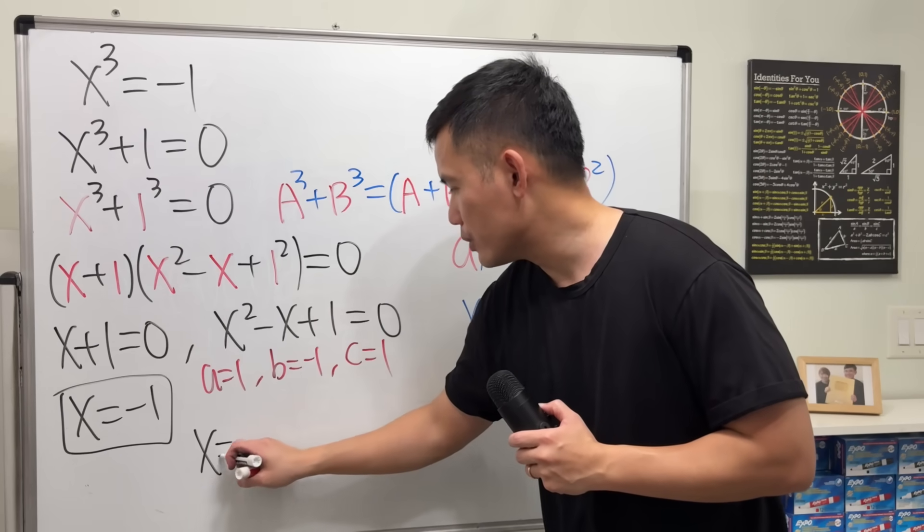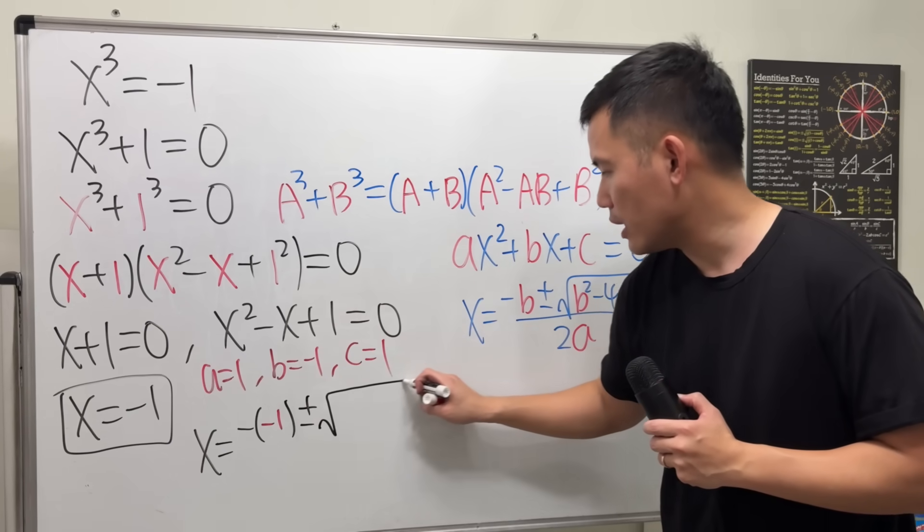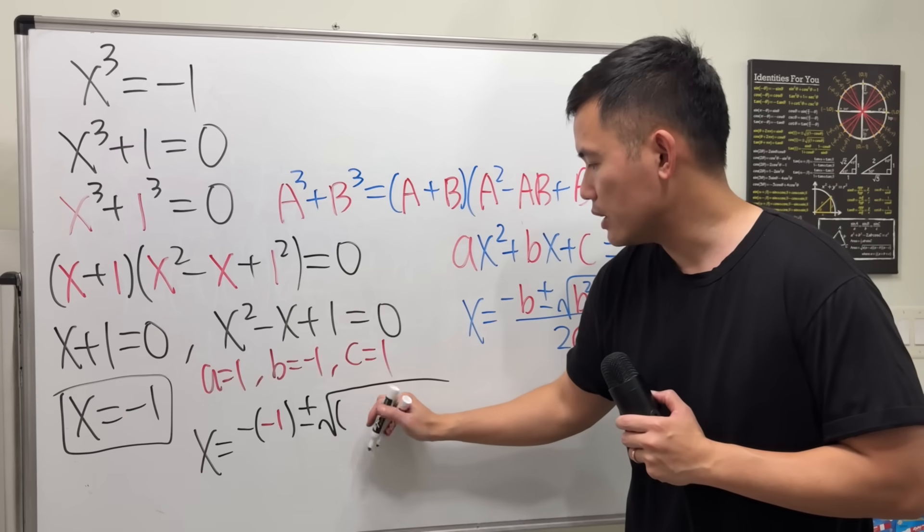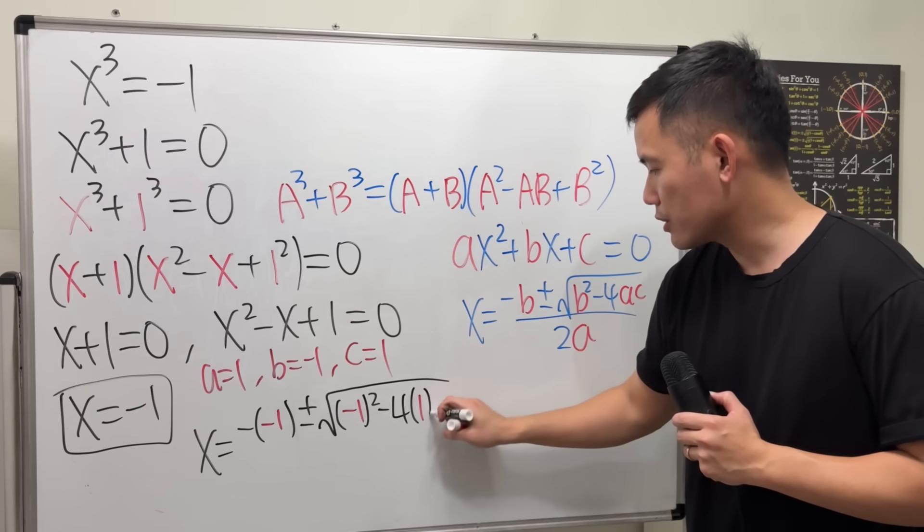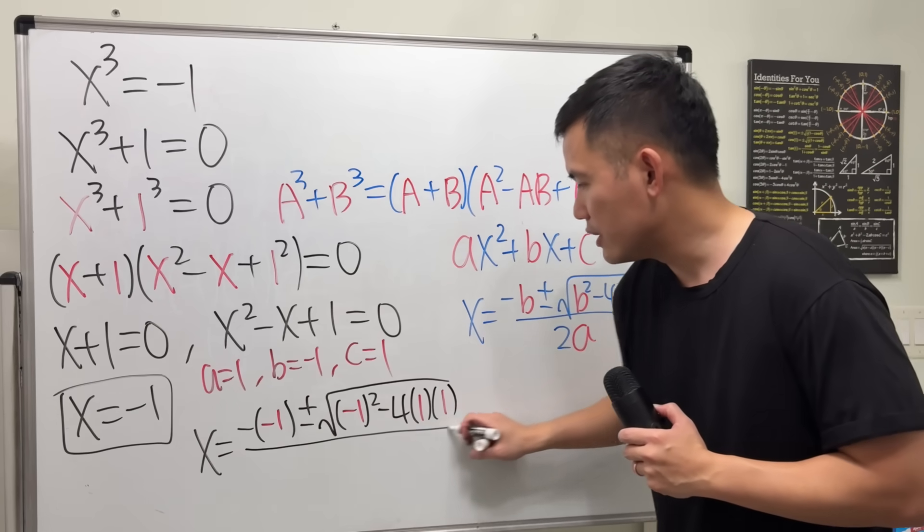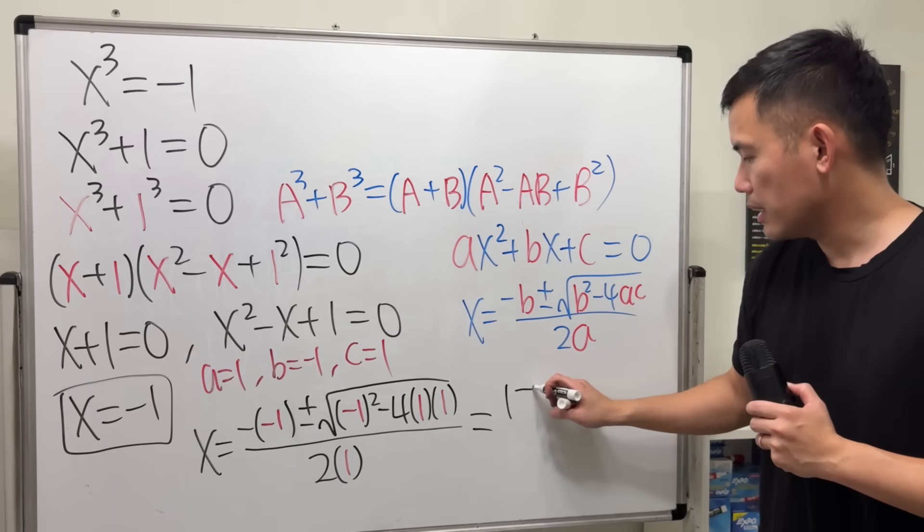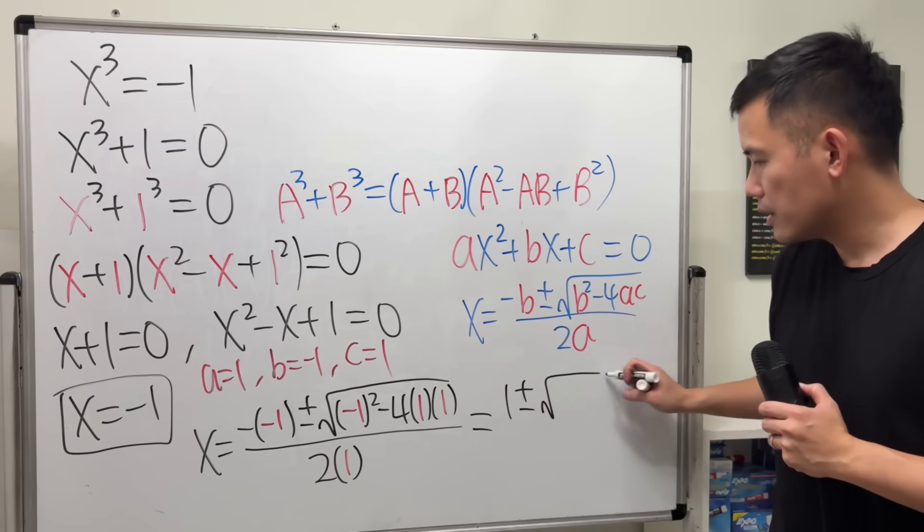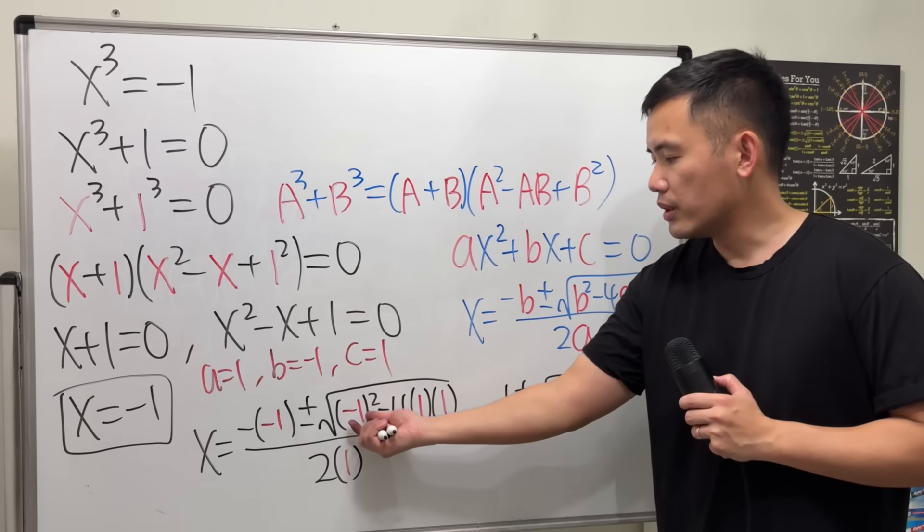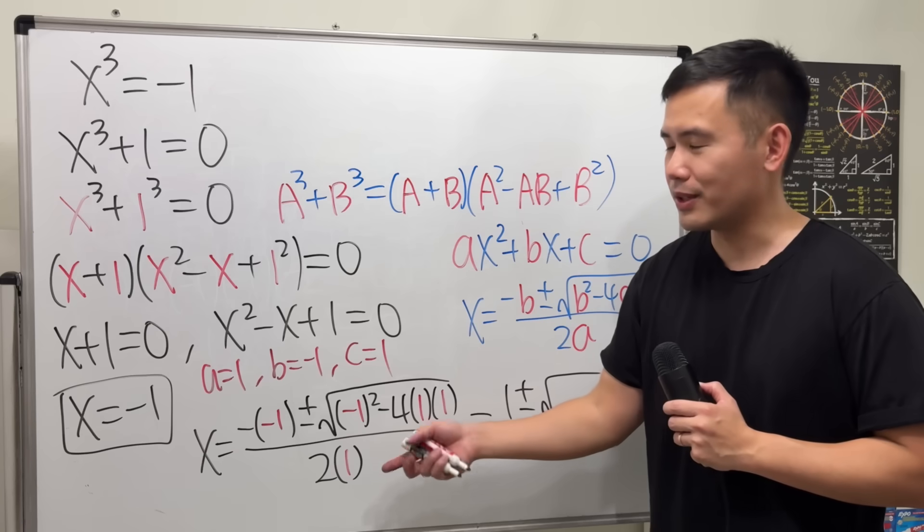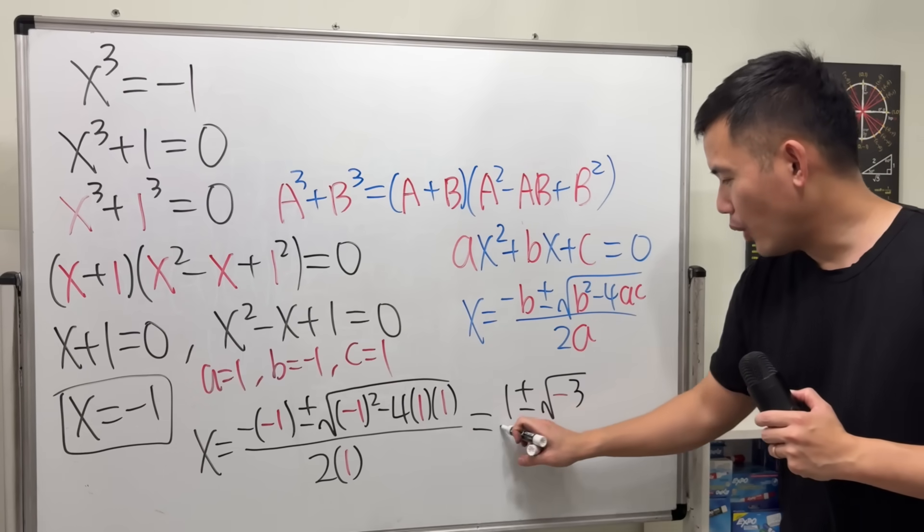We will get x being equal to negative b, which is negative 1. So be careful, we have a double negative. Plus or minus square root of b squared. We have to do negative 1 squared minus 4ac. 4, a is 1, c is 1, so multiply it by this and that. All divided by 2 times a, which is 2 times 1. Okay, that's just 1. Plus or minus square root. Now for the inside. Negative 1 squared is positive 1. This is minus 4 altogether. 4 times 1 times 1 is just 4. 1 minus 4 is negative 3, and then over 2 times 1, which is 2.